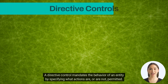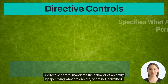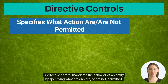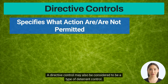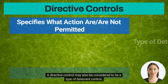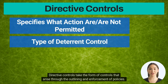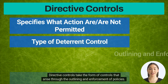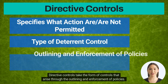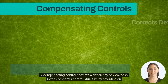A directive control mandates the behavior of an entity by specifying what actions are or are not permitted. A directive control may also be considered to be a type of deterrent control. Directive controls take the form of controls that arise through the outlining and enforcement of policies.